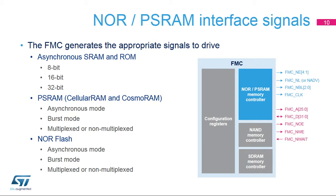The FMC outputs a unique chip select signal to each bank and performs only one access at a time to an external device. The external memories are connected either to the NOR PSRAM controller or the NAND controller, and share address, data, and control signals.